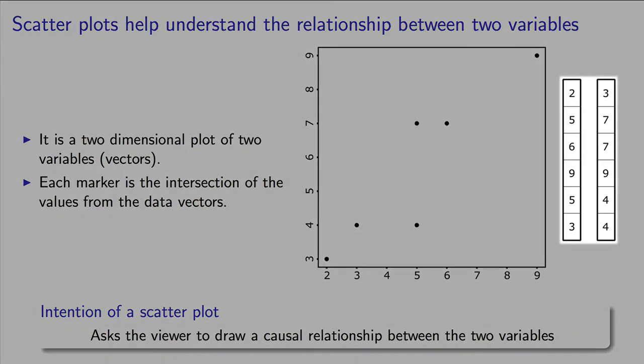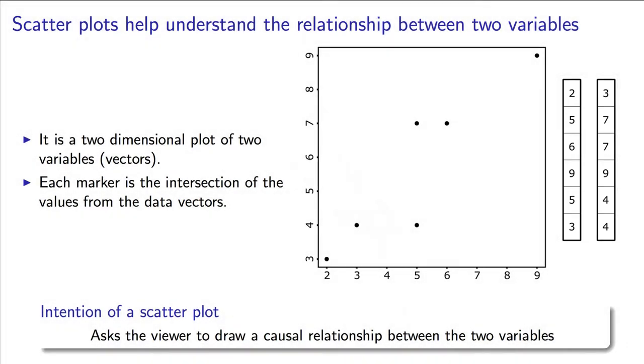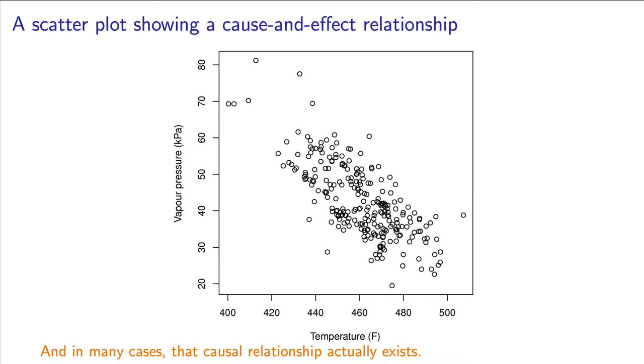These vectors must, of course, be of equal length. Here is a plot, then, of vapor pressure shown on one axis and plotted against temperature on the other axis.